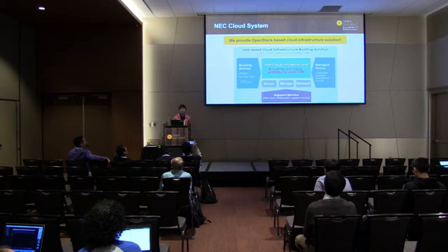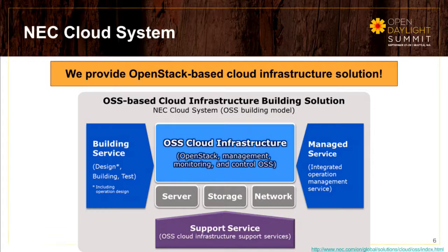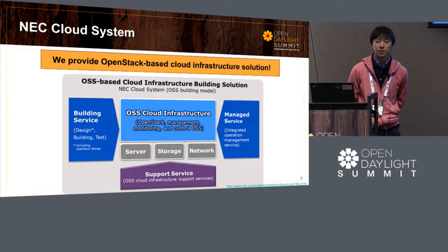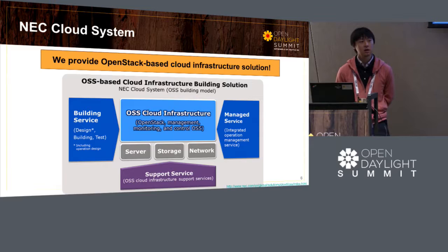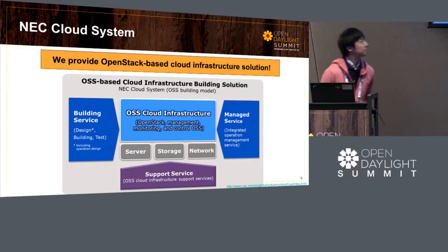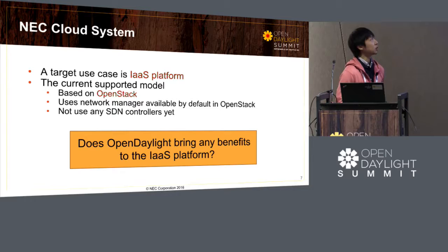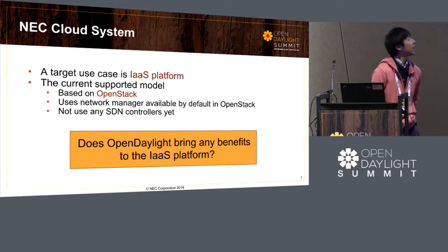As a solution provider, we offer an OpenStack-based cloud infrastructure solution we call NEC Cloud System. This service offers complete support for every aspect of cloud infrastructure — designing, building, and operating it. Based on customer requirements, we build cloud infrastructure based on OpenStack as well as other open source software. Our current supported model uses the network manager available by default in OpenStack, which is the OVS agent.